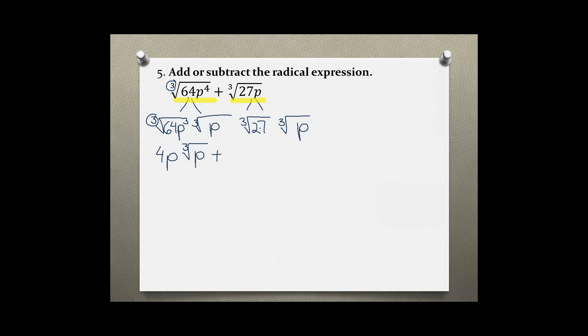Now taking the cube root of the perfect part of the second term, the cube root of 27 is 3, and again p does not have a perfect cube, so it just comes down.